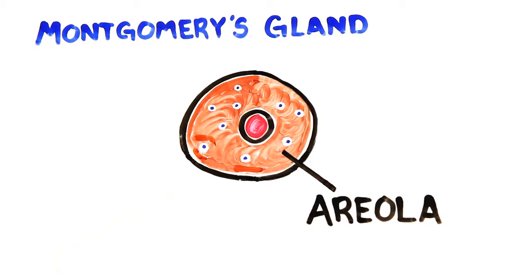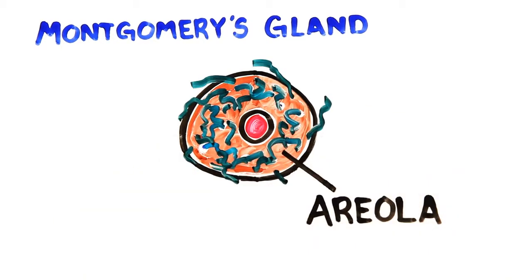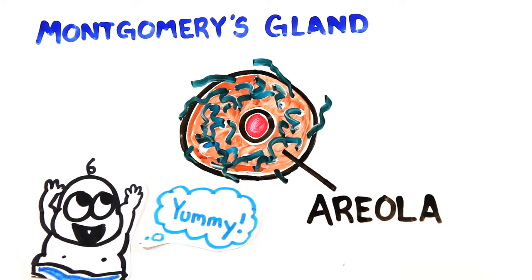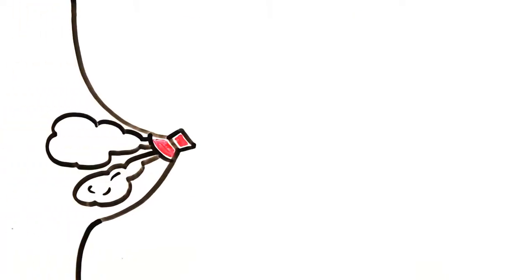While lactating, the glands make oily secretions that keep the nipple lubricated and may also release compounds to make the nipple seem yummy for a baby. The nipple isn't composed of a single orifice, but has many tiny holes you cannot see with the naked eye.